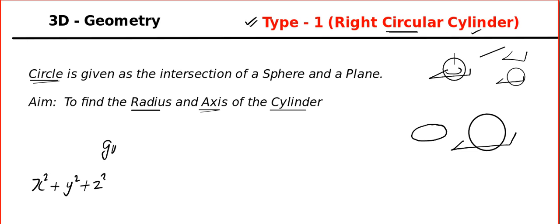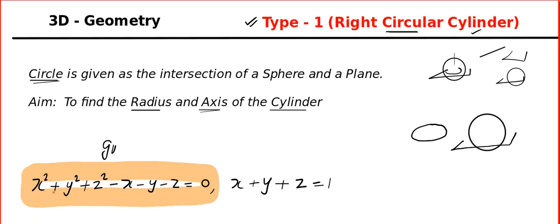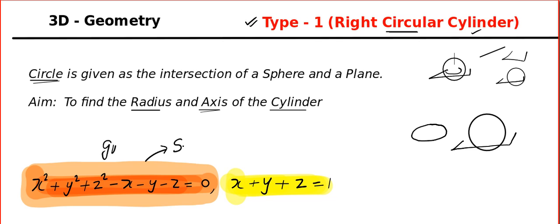Now comes the interesting part for a mathematician, and maybe the most annoying part as a student — just a difference in perspective. They use the word circle, but they have given a sphere. And if you have learned spheres, you might know that the intersection of a sphere and a plane — this is a sphere and this is a plane — gives us a circle.